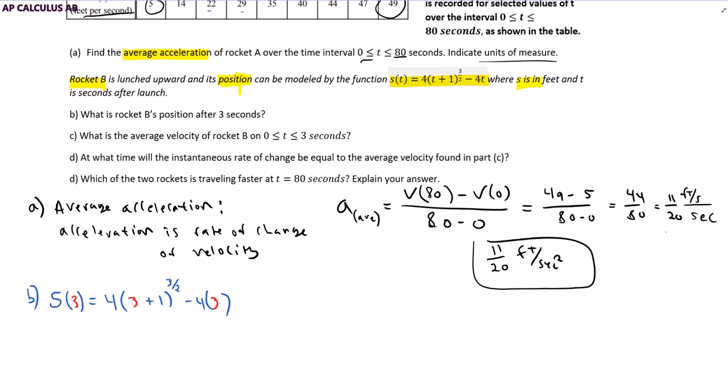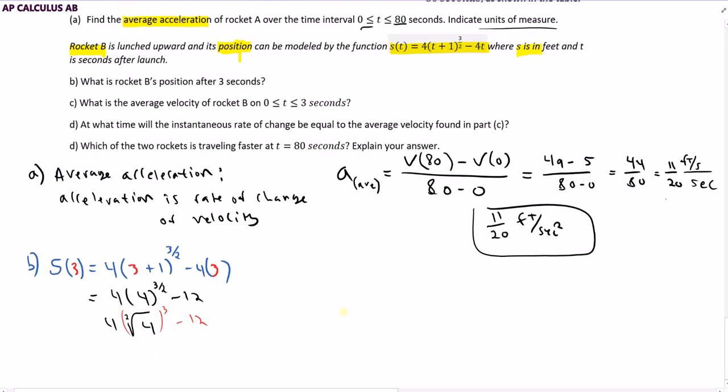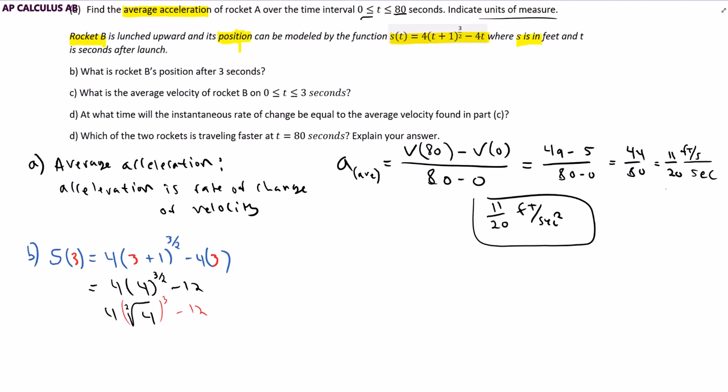To do some of this math, we're going to get 4 times 4 to the 3/2 power minus 12. 4 to the 3/2 power is basically the square root of 4 cubed, which is easier if you write it with the cubed on the outside. The square root of 4 is 2. 2 cubed is 8. So we're getting 4 times 8 minus 12, which is 32 minus 12, which is 20. So S(3) is 20 feet. It's 20 feet away from where it started is basically what that's saying for part B.